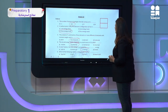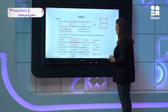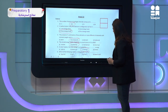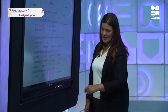Which of the following rodents undergoes aestivation? They escape from the hot summer. The answer is the jerboa, which is a type of rodent. This is model exam A2 type.